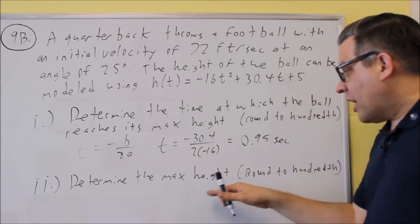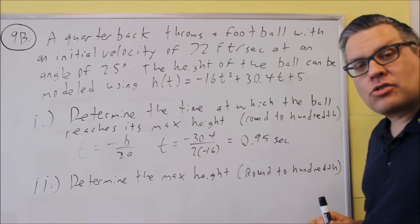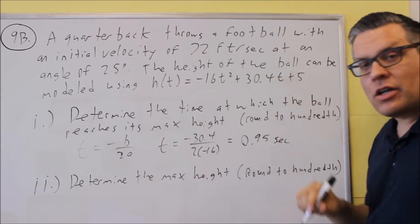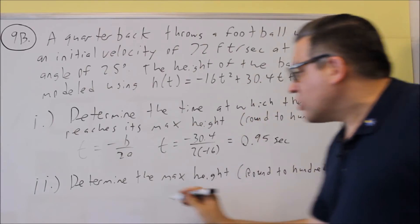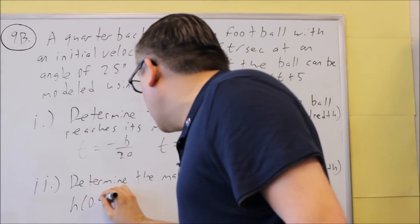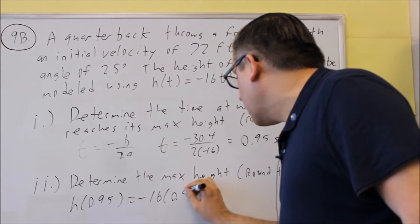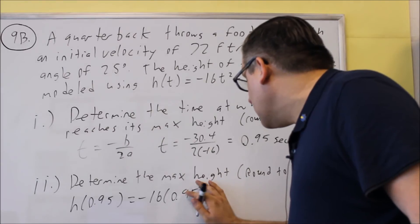Now, part 2 actually asks you for what is the maximum height. So, when you want to find the maximum height here, we're going to put 0.95 back into the original equation. So, we're going to do H of 0.95, and we just put that into here for all the T's.